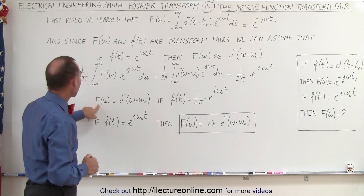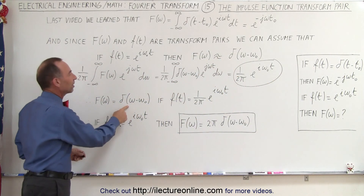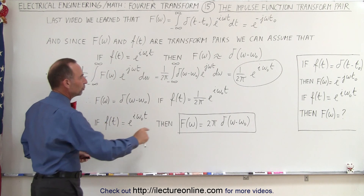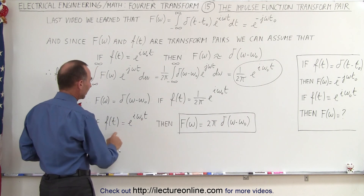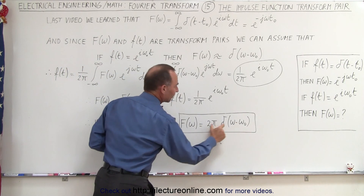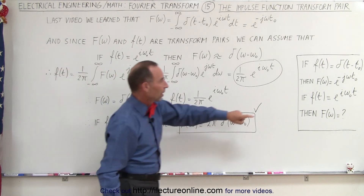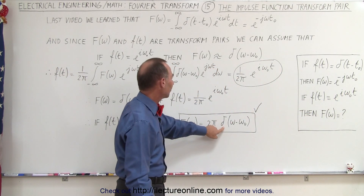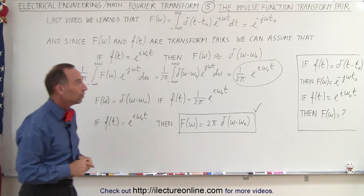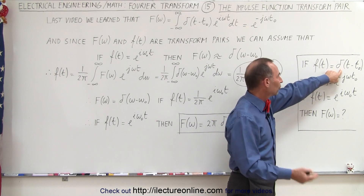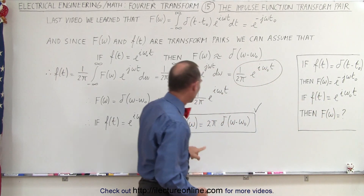This means that the Fourier transform of this function — not the one we started with, but the Fourier transform of 1 over 2π · e^(iω₀t) — is equal to that delta function. So if we multiply both sides by 2π, we get e^(iω₀t), and the Fourier transform of this function must equal 2π times the delta function. In other words, the Fourier transform of e^(iω₀t) is equal to 2π · δ(ω − ω₀). So now we can go back and forth between these transform pairs.